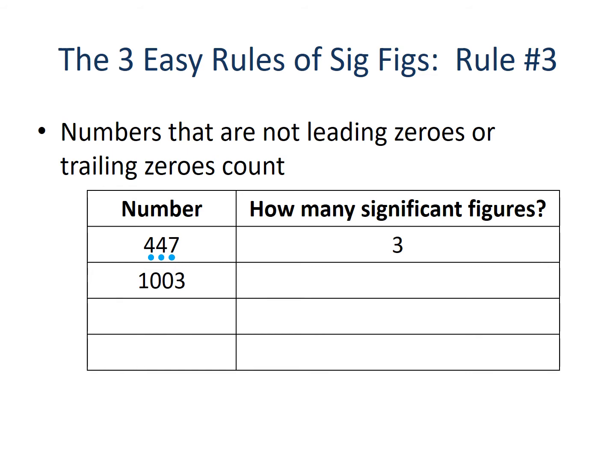Our next example is 1003. A quick examination reveals there are no leading zeros or trailing zeros, but we do have two zeros in the middle. Rule number three says those middle zeros are not leading or trailing, so they count towards our tally. The one, those two middle zeros, and the three will count — this is an example of zeros sandwiched between non-zero numbers. So 1003 has four significant figures.